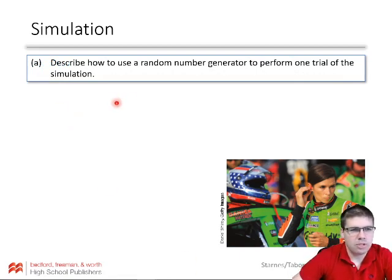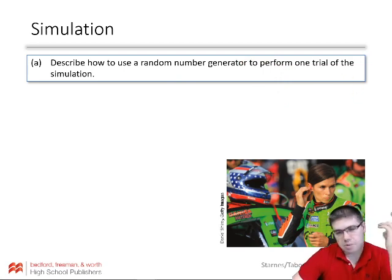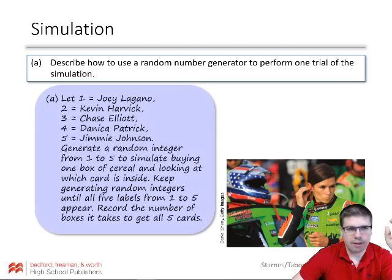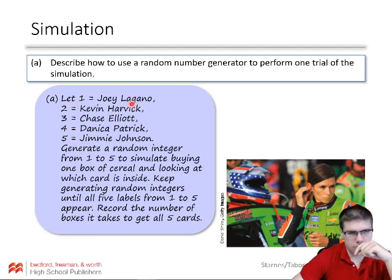So describe how to use a random number generator to perform one trial of the simulation. Here's their answer to it. You can think through on your own what you might do in this case. But they're going to just basically use the digits one through five. So they're going to record: one is Joey, two is Kevin, three is Chase, and so on.